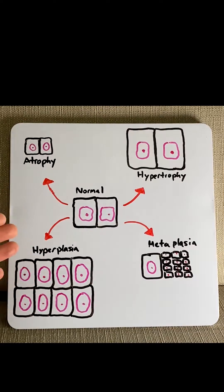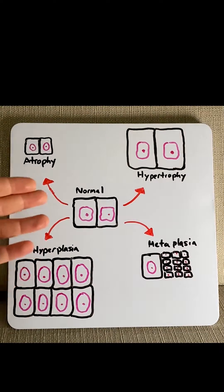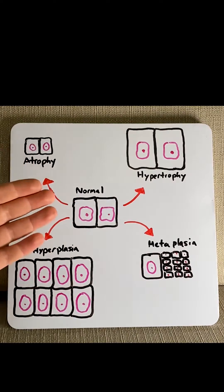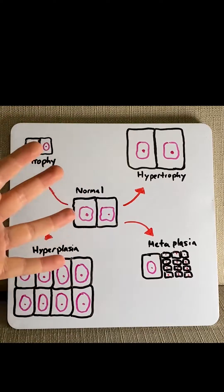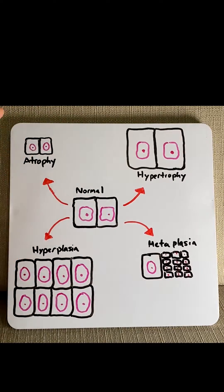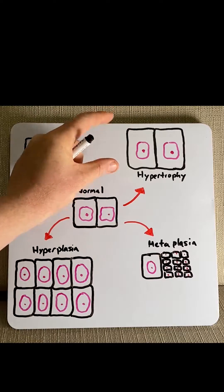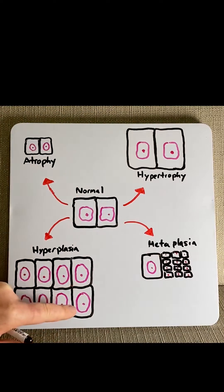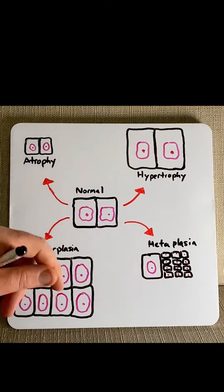Cells are constantly exposed to changes in their environment, which could be beneficial or potentially harmful. Cell adaptation refers to a morphological change that cells make to this variant environment. There are generally considered four types of cell adaptation: atrophy, where cells decrease in size; hypertrophy, where cells increase in size; hyperplasia, where cells increase in number; or metaplasia, where cells change form.